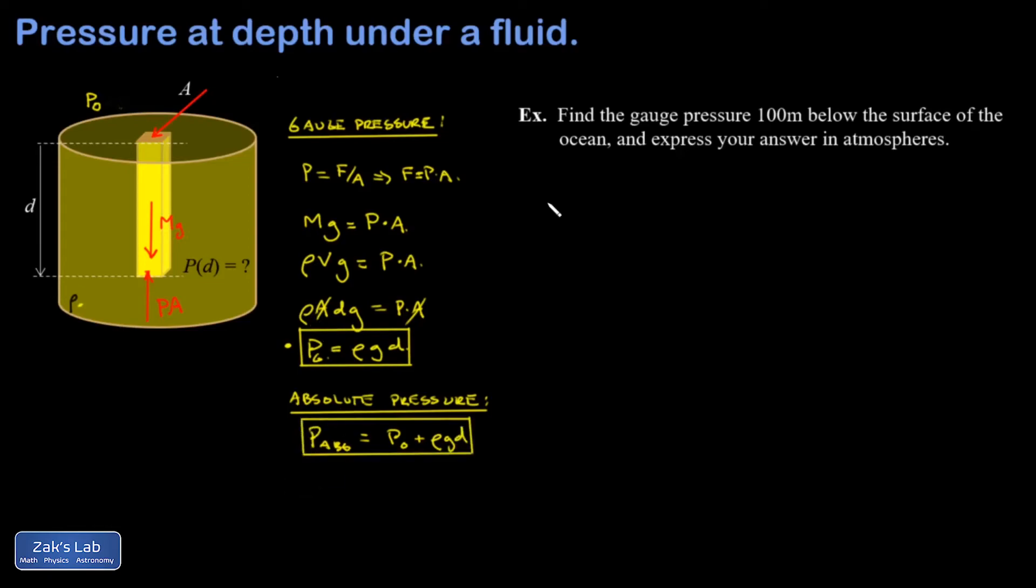Let's apply our new formula to a simple example. On this one we're asked to find the gauge pressure 100 meters below the surface of the ocean and express our answer in atmospheres. One thing I forgot to put on here is that the density of seawater is higher than the density of fresh water—in fact there's something like 30 kilograms of salt dissolved in every cubic meter of seawater, so it has a density of 1030 kg/m³.